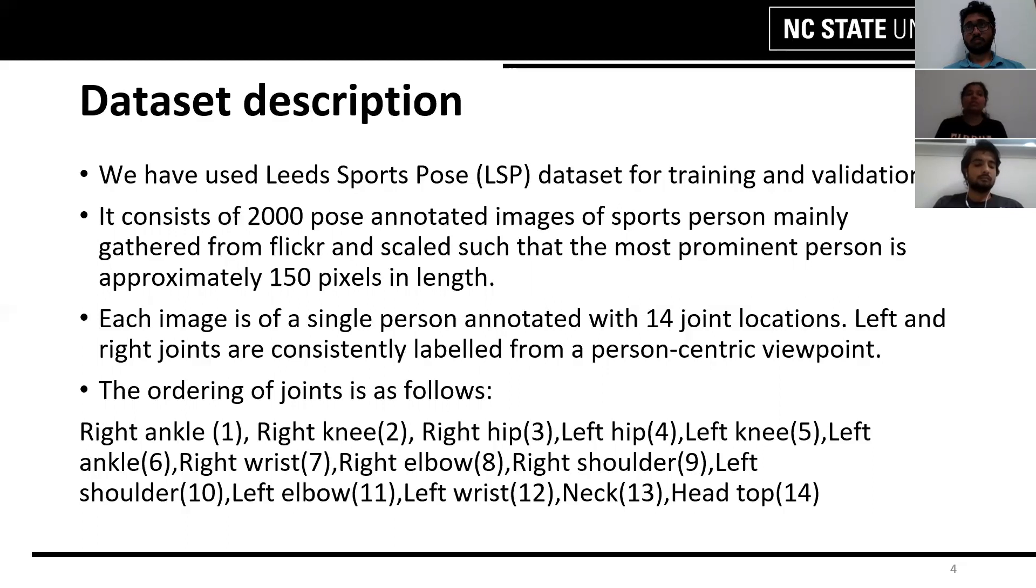Each image consists of a single person and is annotated with 14 joint locations. The annotations are ordered as follows: right ankle corresponds to annotation one, the right knee to annotation two, right hip to annotation three, and so on.